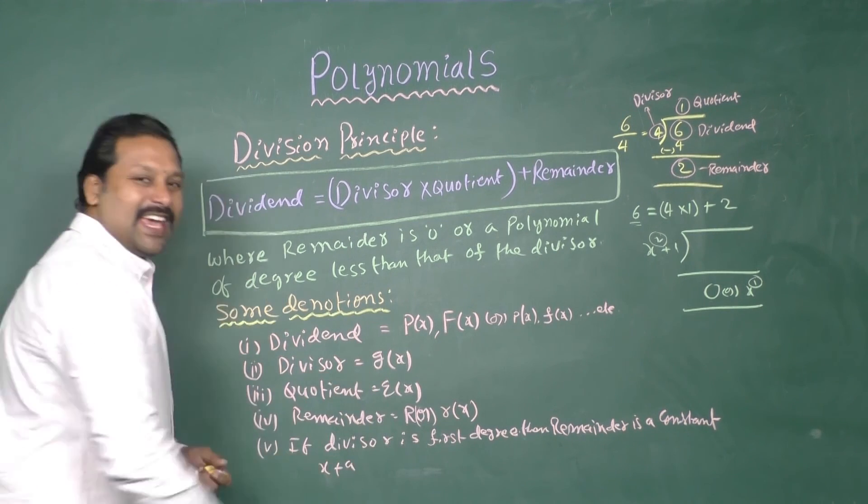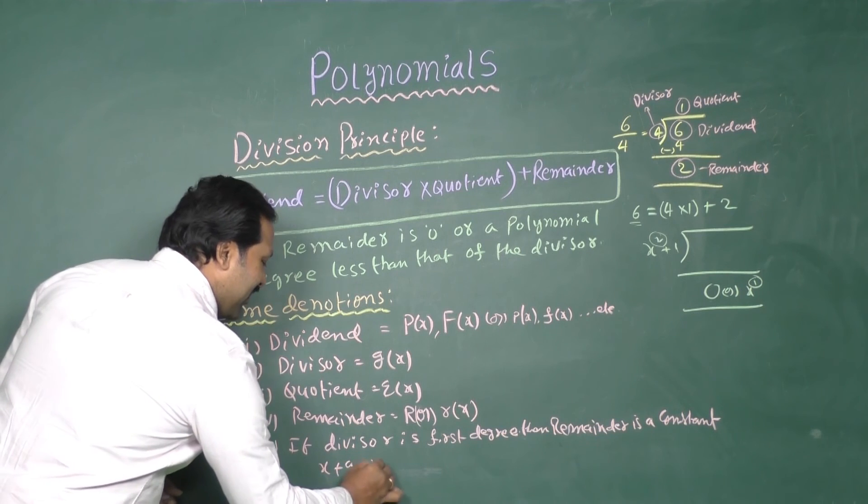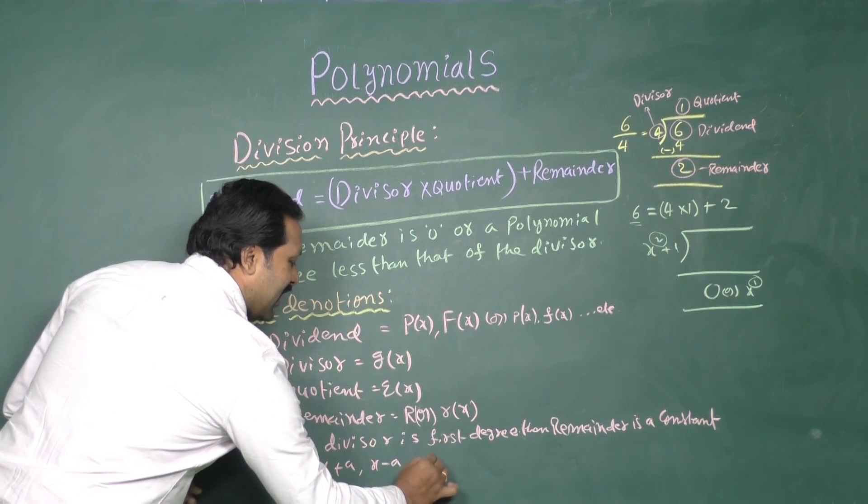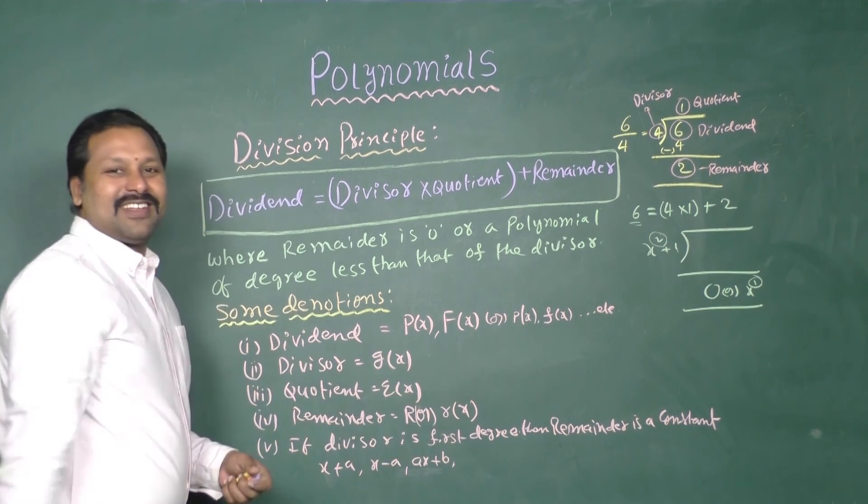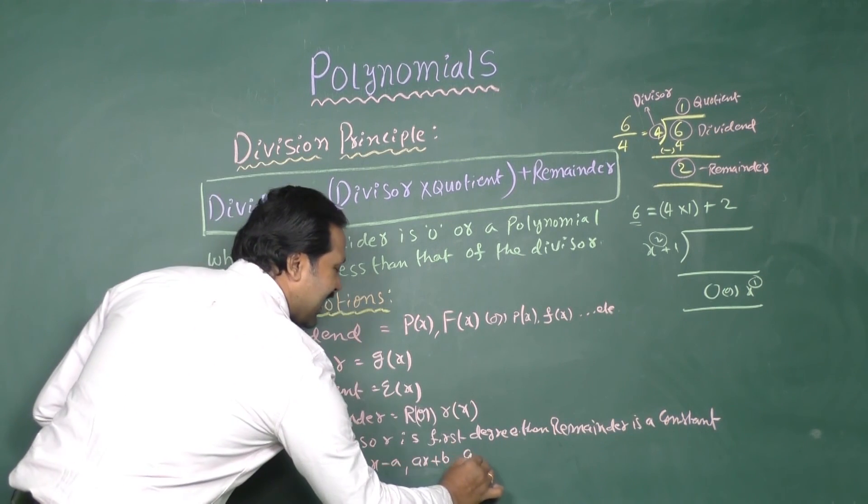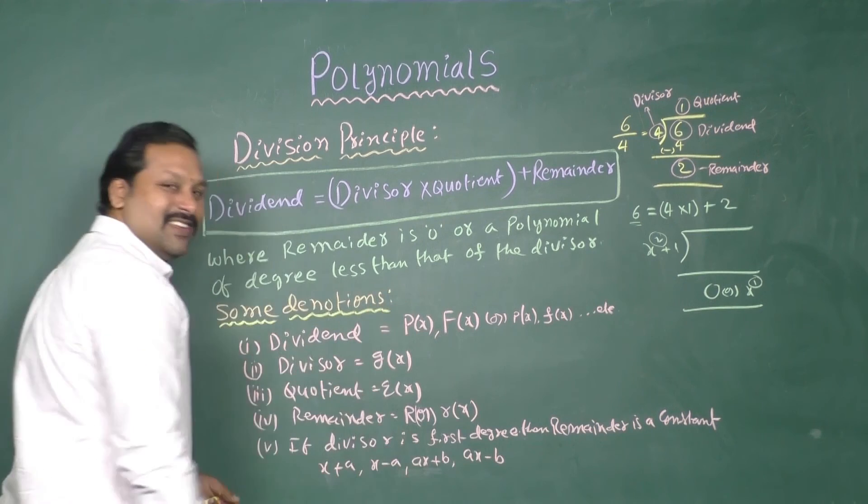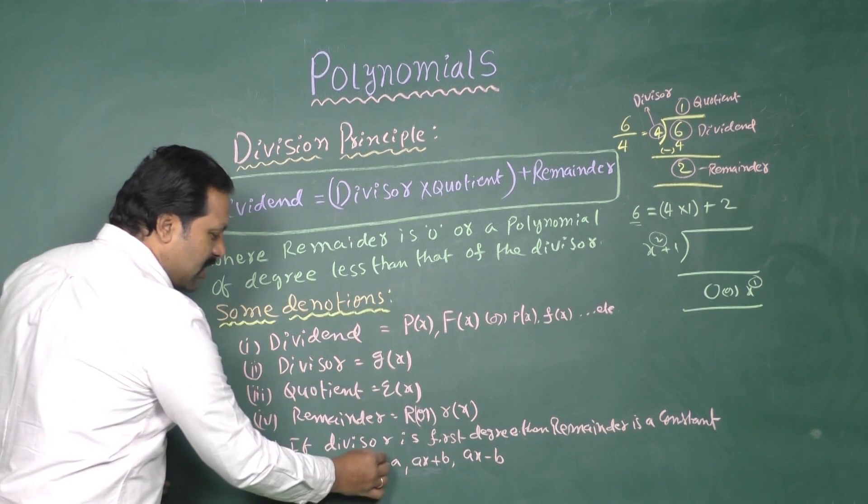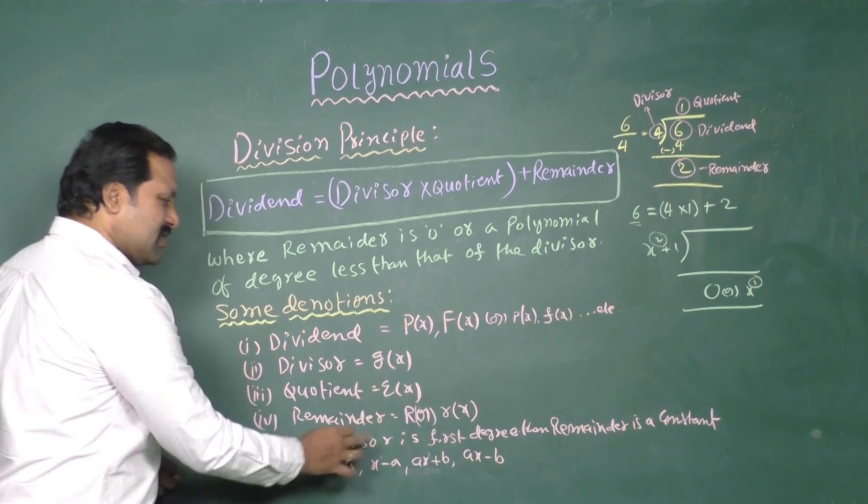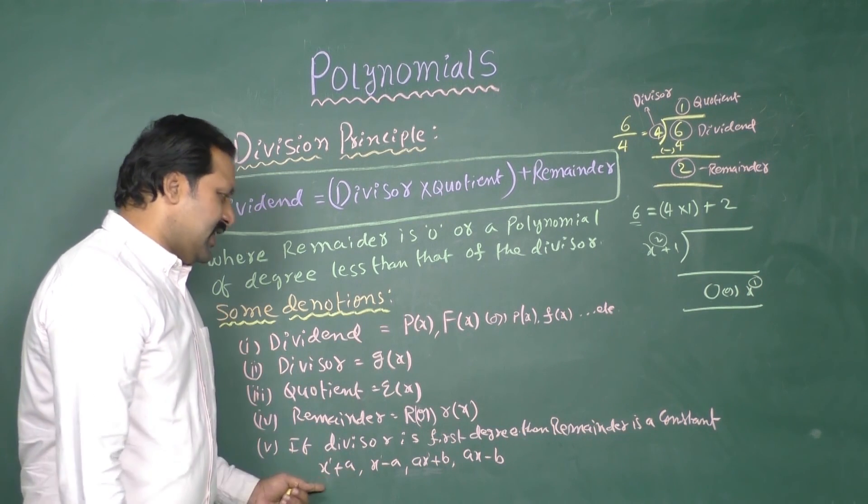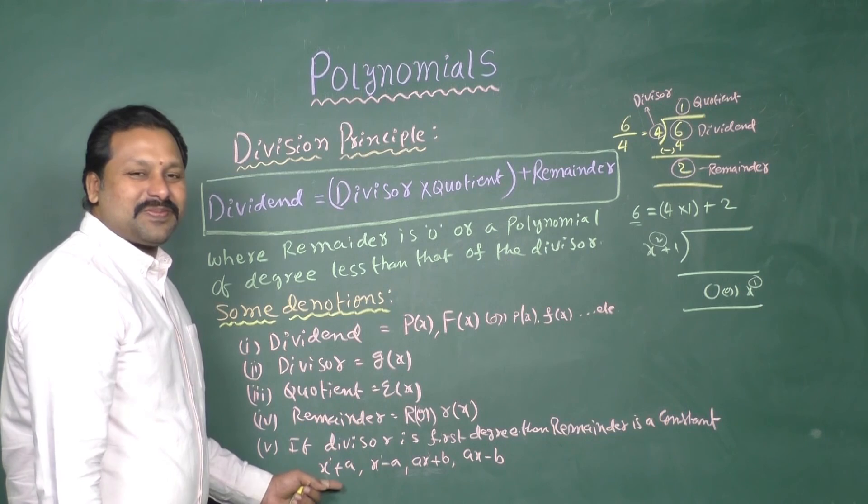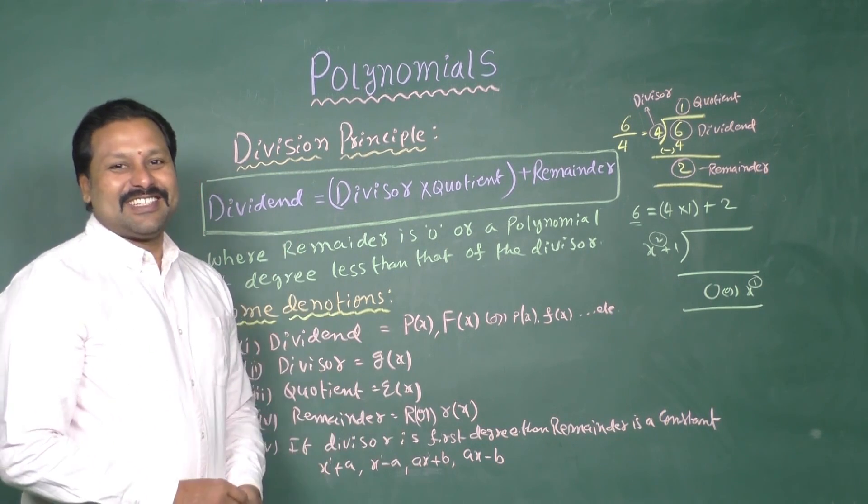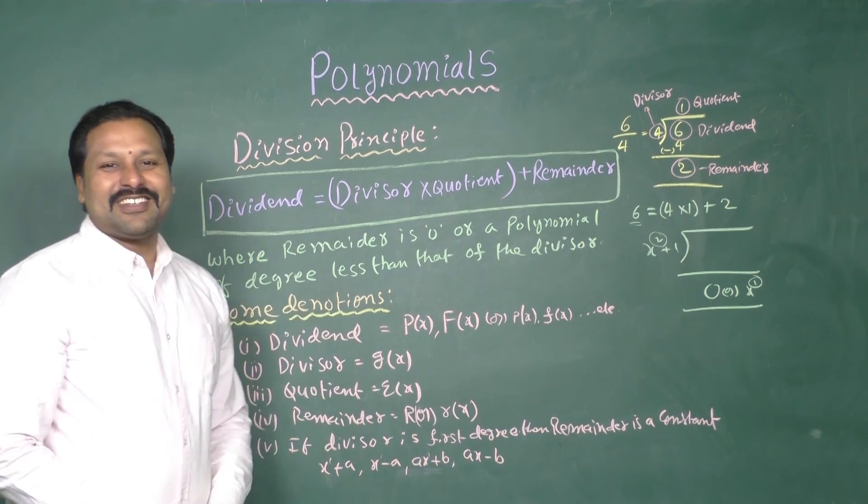x plus a or x minus a or x plus b or x minus b. So, in these expressions, the leading degrees are 1. That is why this is the first degree expression. Then, our remainder must be a constant. Please have a look.